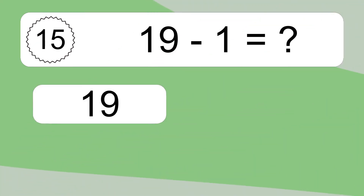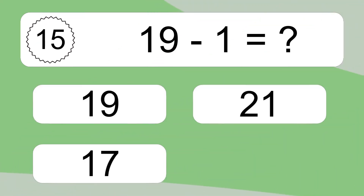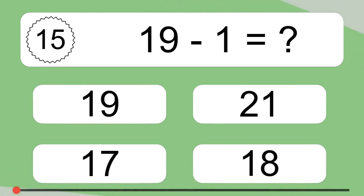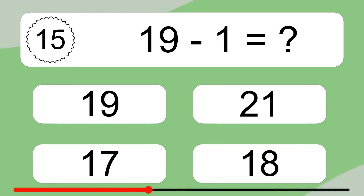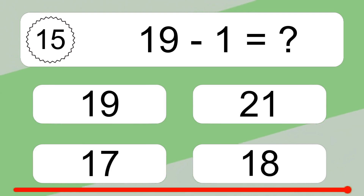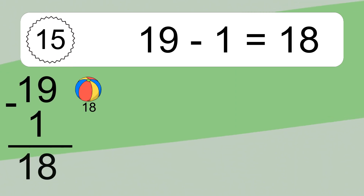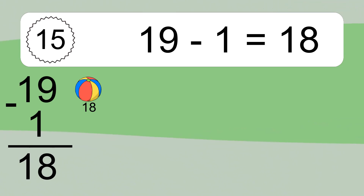19 minus 1 equals what? 19 minus 1 equals 18. Let's count it. 18.